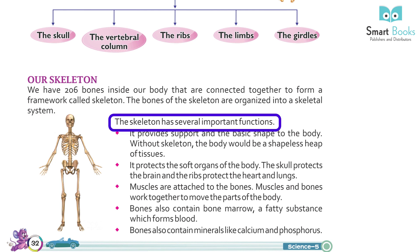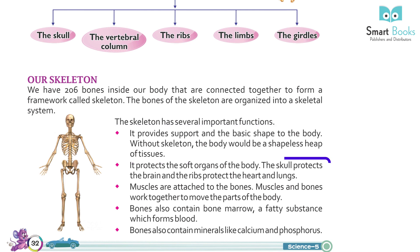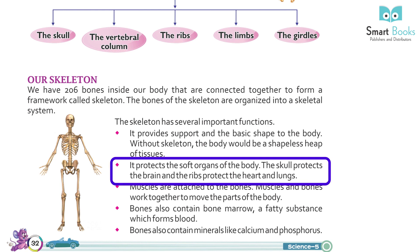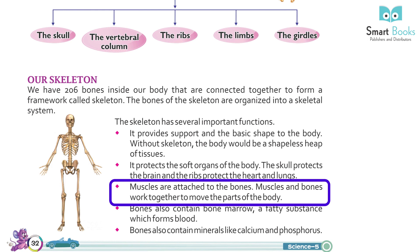The skeleton has several important functions. It provides support and the basic shape of the body. Without a skeleton, the body would be a shapeless heap of tissues. It protects the soft organs of the body. The skull protects the brain, and the ribs protect the heart and lungs. Muscles are attached to the bones.